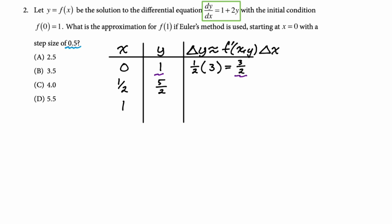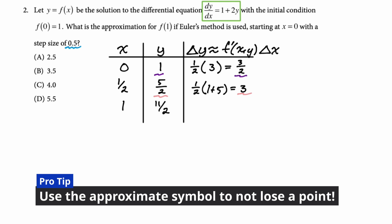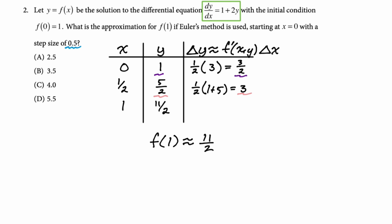What we do to find our new y value is we take our old y value and our approximate delta y and we add them together. So this will be five halves. Repeat the process as many times as necessary. So delta x is one half. We have to do one plus two times five halves. So one plus five. So that'll be six. And then six over two is three. And I'm going to add these together because I need to find this new y value. So five halves plus six halves is 11 halves. We don't have to do this for multiple choice but on free response you definitely then want to say that f of one is approximately 11 halves. Not equal to 11 halves. We're only approximating. And then we will box our answer which is d.